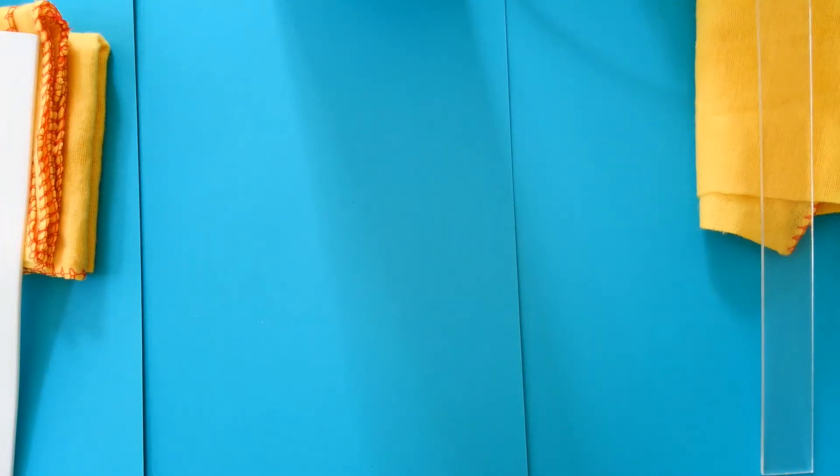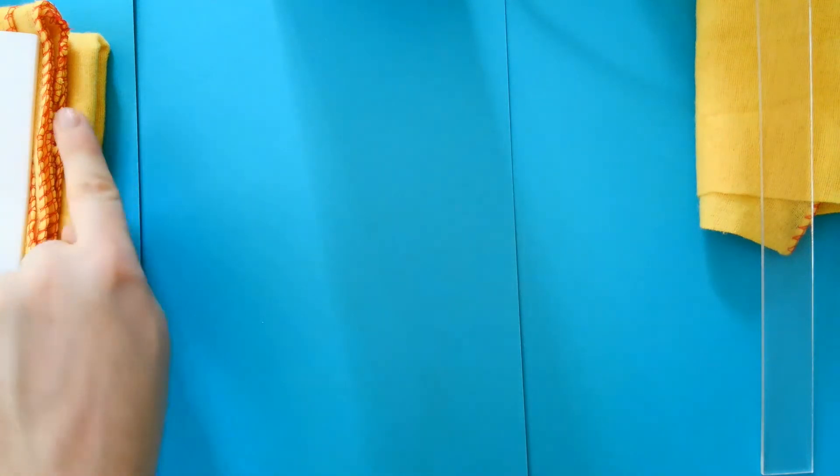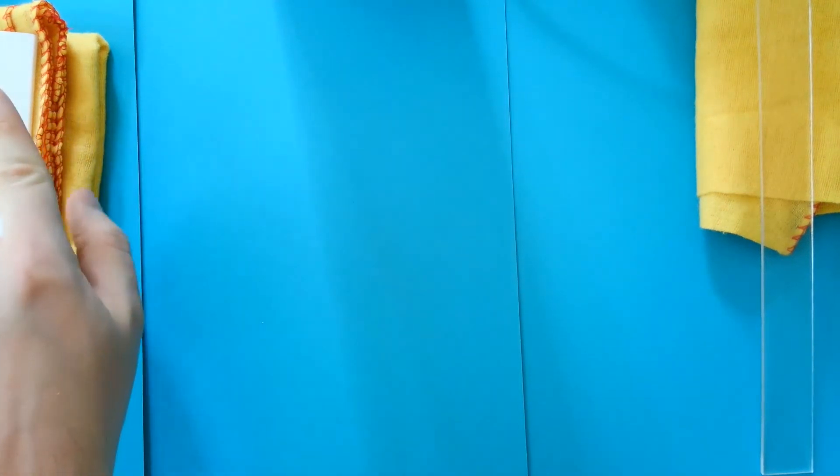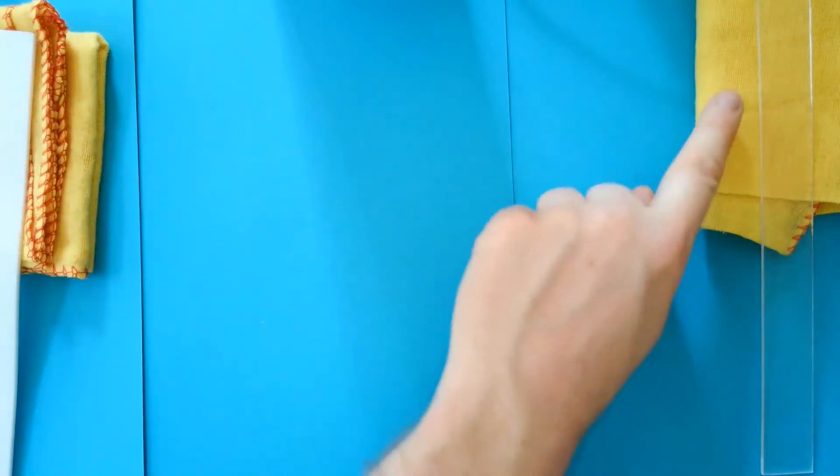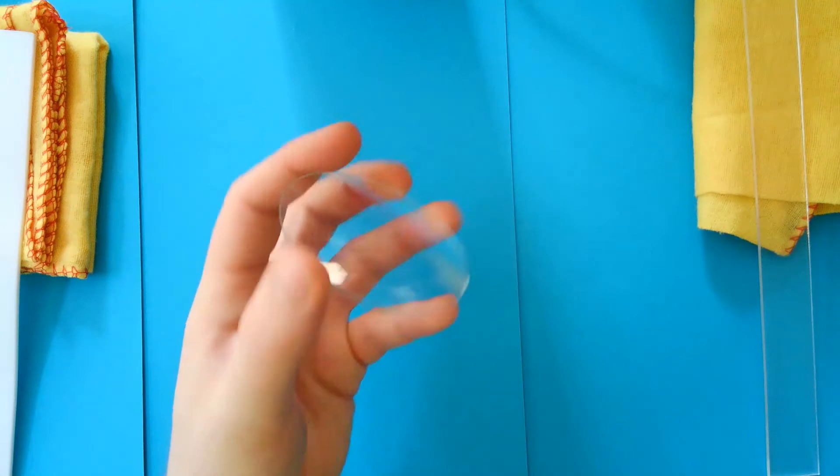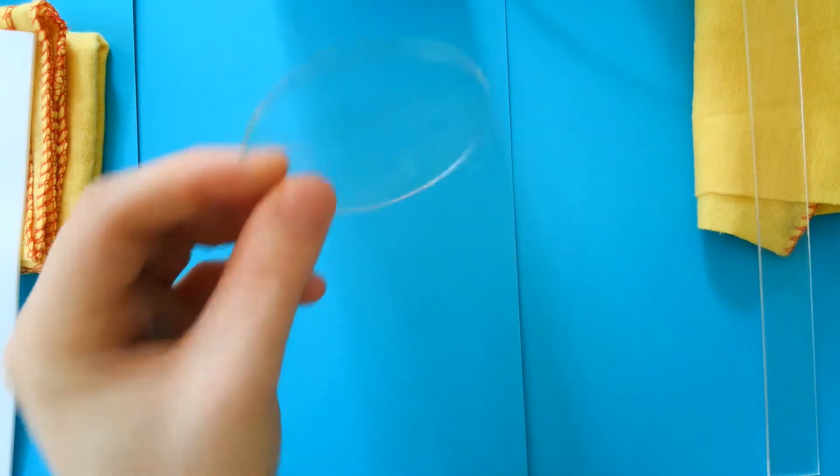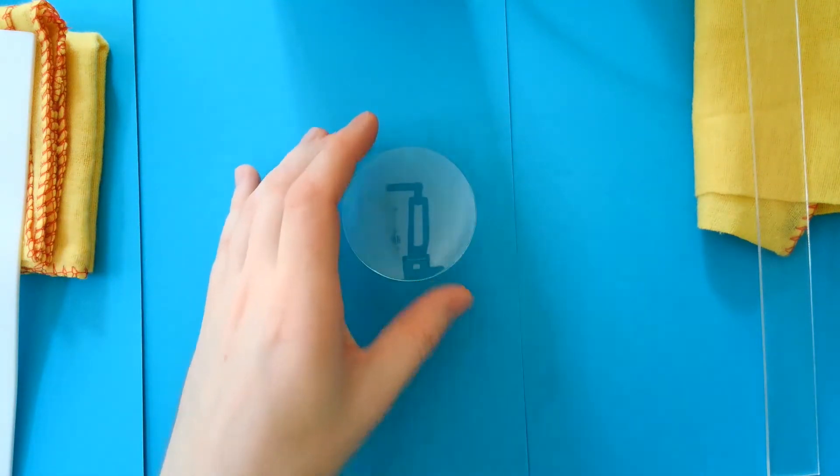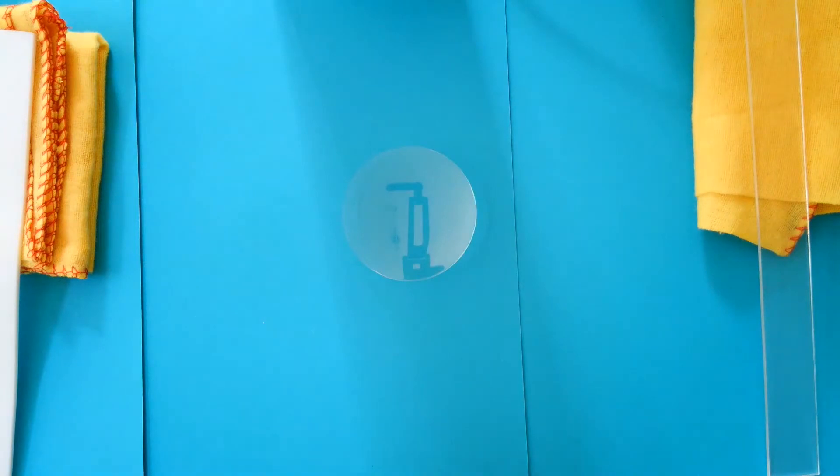Here we have our practical to investigate the electrostatic forces on charged rods. Our equipment is a cloth here for the polythene rods and a separate cloth here for the acetate rods. We've also got a watch glass here which lets them rotate, so that's going to go in the middle there.